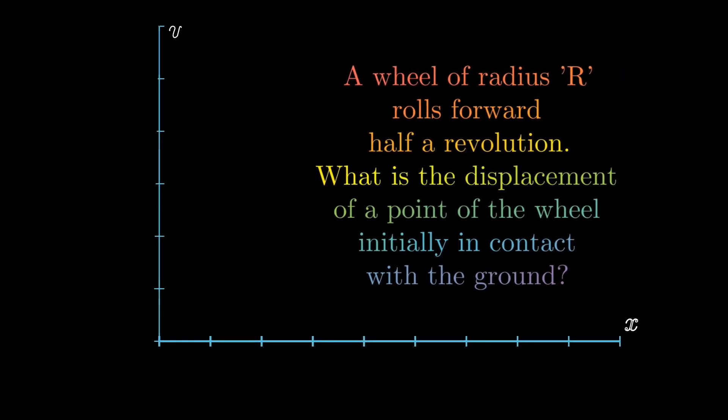To solve this question, let's draw a coordinate plane with a circle of radius R. There is a point on the circle that is in contact with the ground. If the circle rolls a full revolution, it will cover a distance of its circumference, which is 2πR.